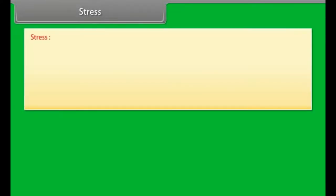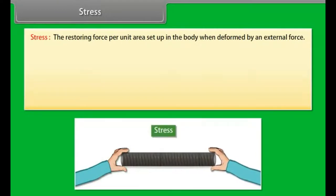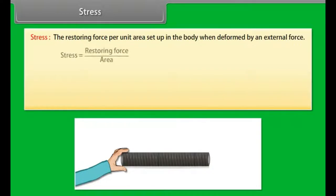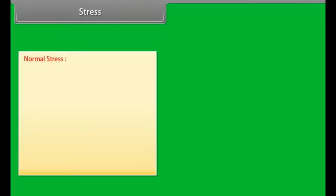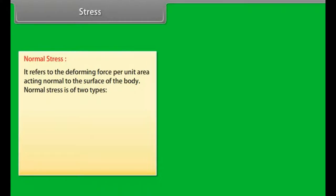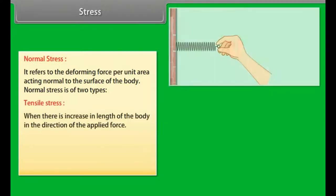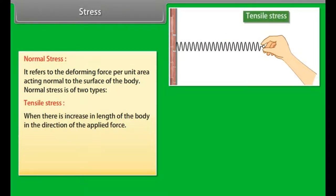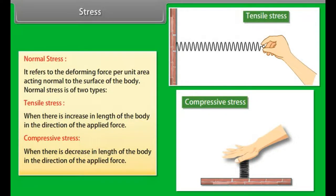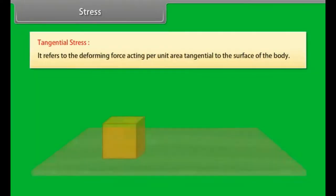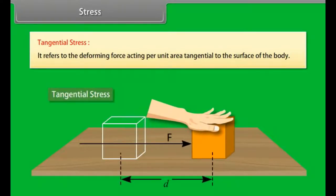Stress is defined as the restoring force per unit area set up in the body when deformed by an external force. Stress equals restoring force divided by area. The SI unit of stress is Newton per meter squared. Stress is of two types: Normal stress, which refers to the deforming force per unit area acting normal to the surface — subdivided into tensile stress (increase in length) and compressive stress (decrease in length) — and Tangential stress, which refers to the deforming force per unit area acting tangential to the surface.